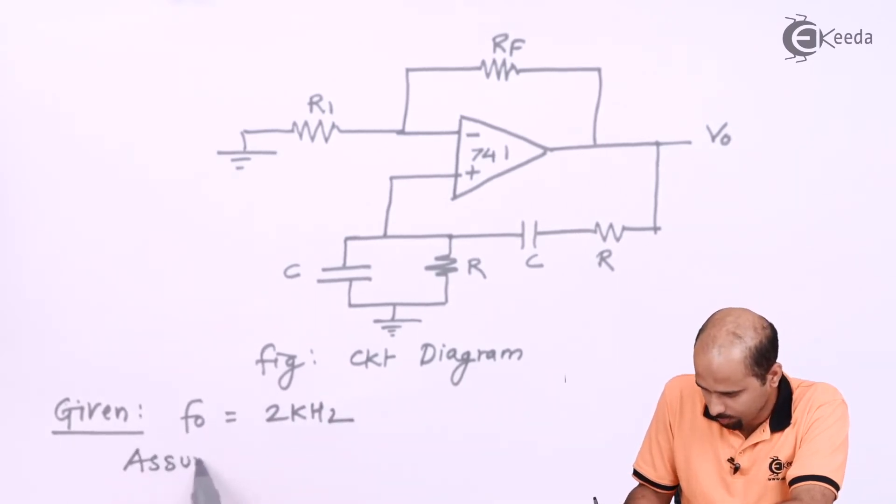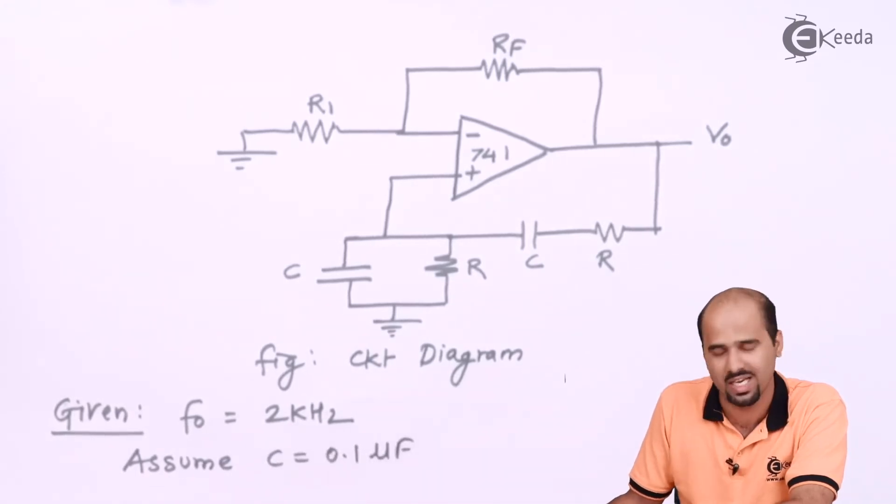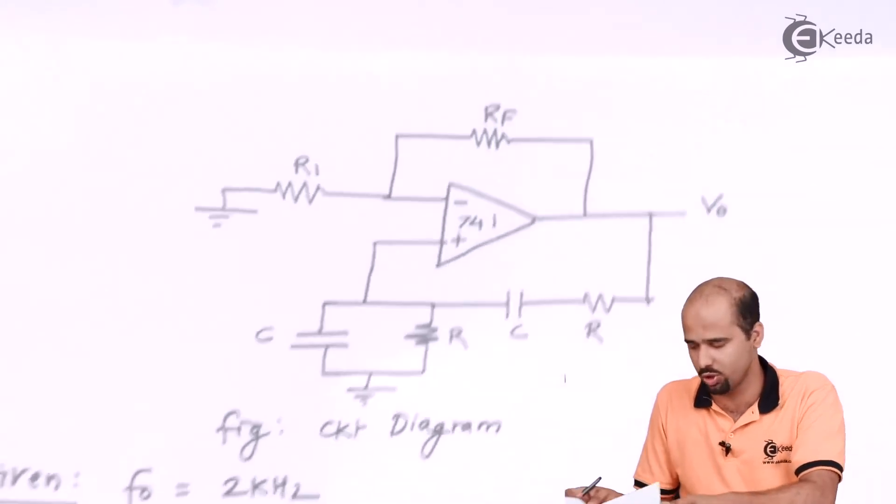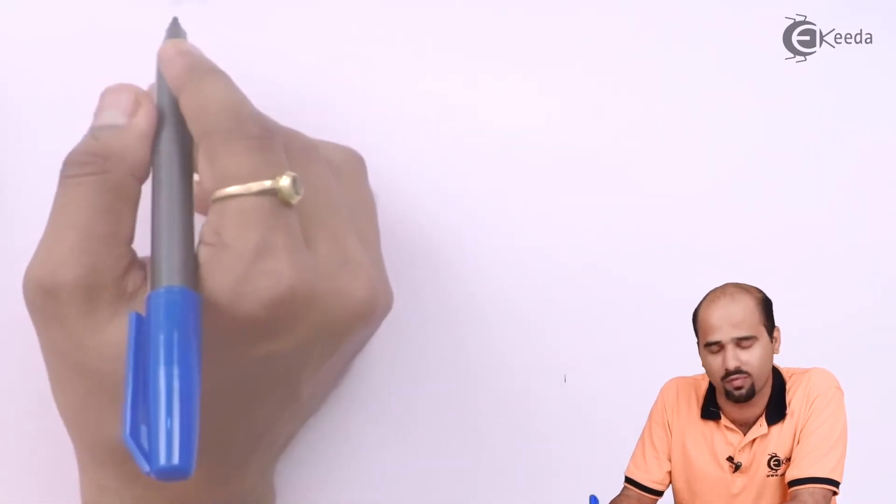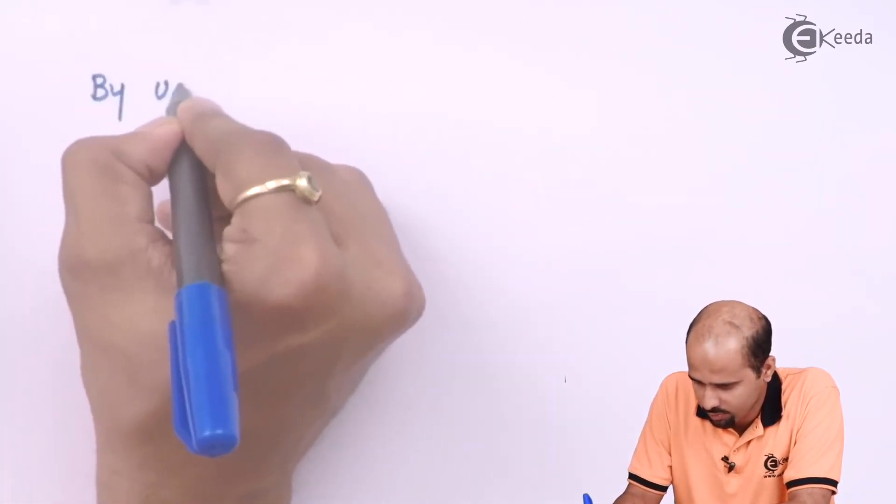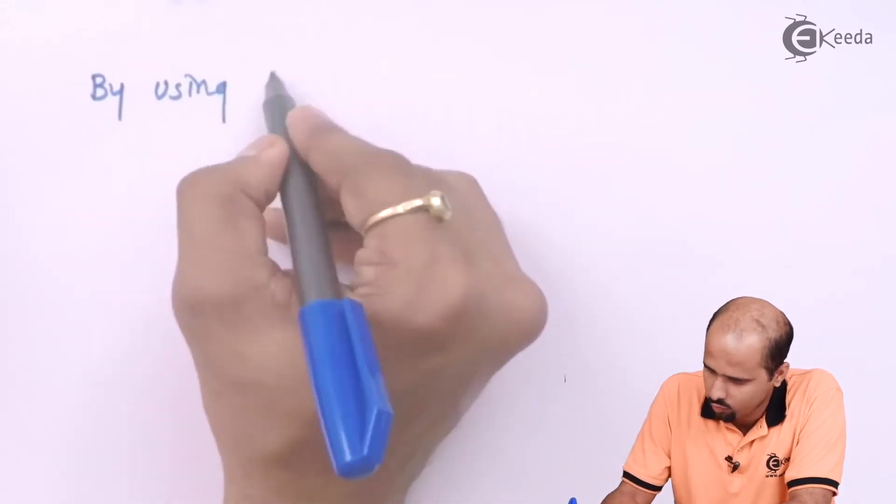What we'll have to say that assume C = 0.1 microfarad. As we all know that C = 0.1 microfarad, once I set then it's now very easy to determine the value of R because by using formula...